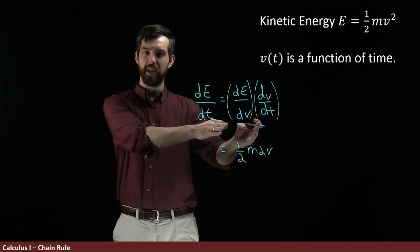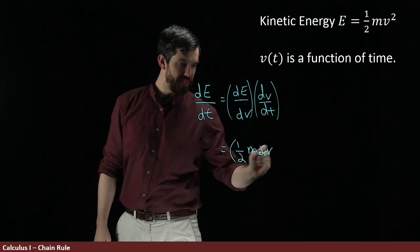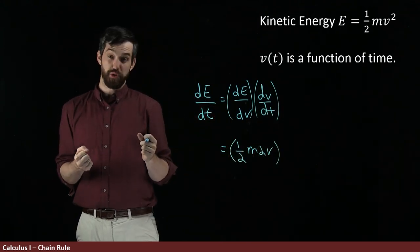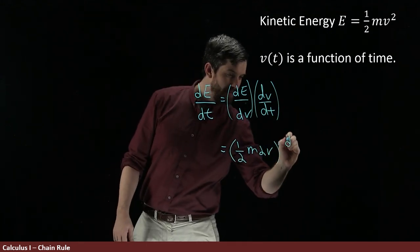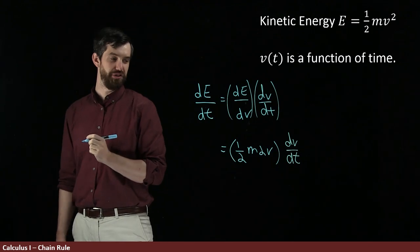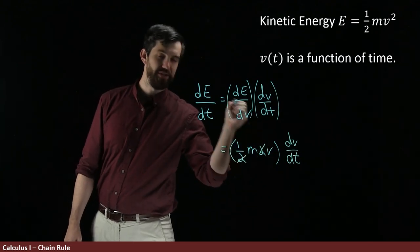So that's the change in the energy with respect to the velocity, but then I have to multiply by the change in the velocity with respect to time. And so I'll multiply on the outside by dv/dt, and if I had given that to you, we could have done that computation as well. And of course, the twos will cancel here.